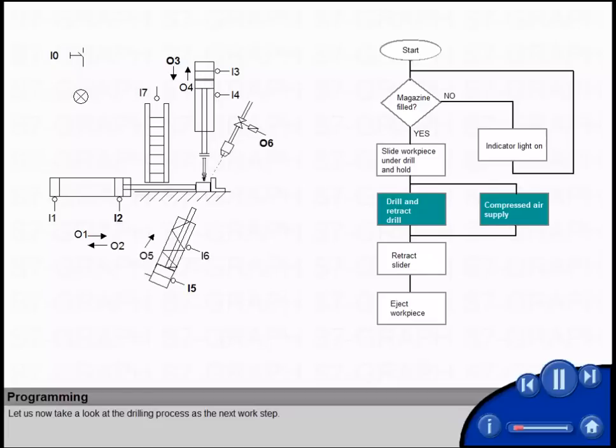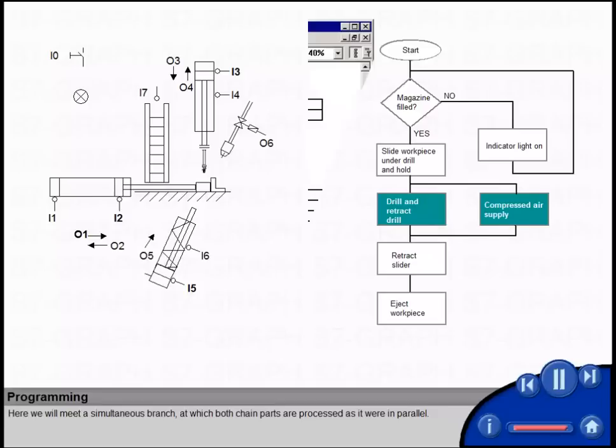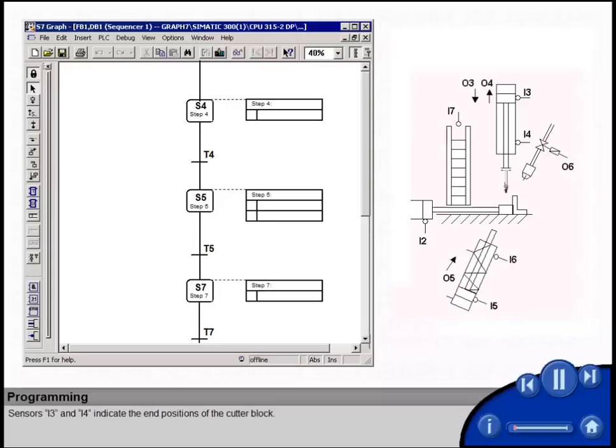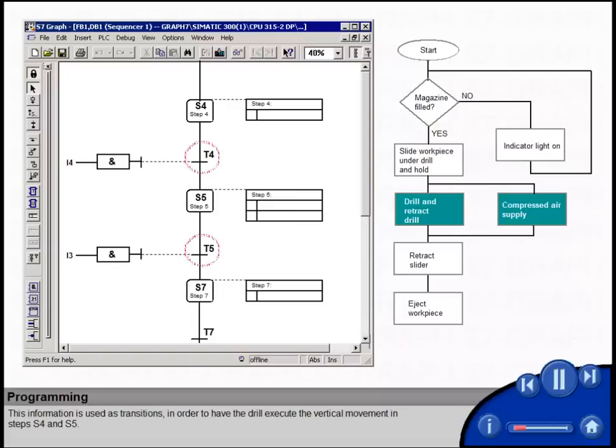Let us now take a look at the drilling process as the next work step. Here we will meet a simultaneous branch, at which both chain parts are processed, as it were in parallel. Sensors I3 and I4 indicate the end positions of the cutter block. This information is used as transitions, in order to have the drill execute the vertical movement in steps S4 and S5.